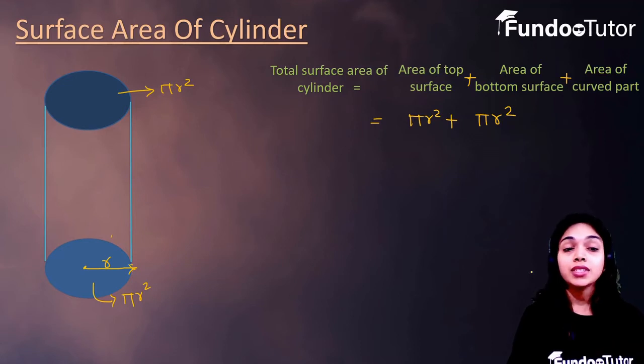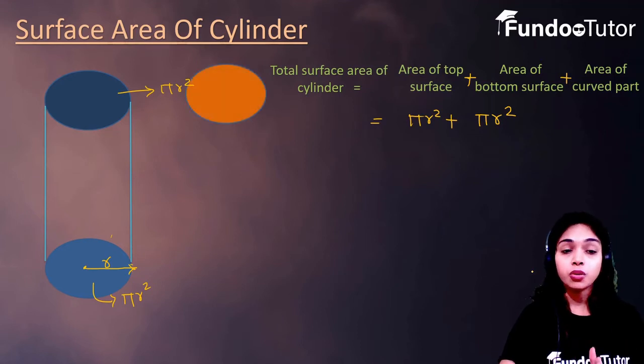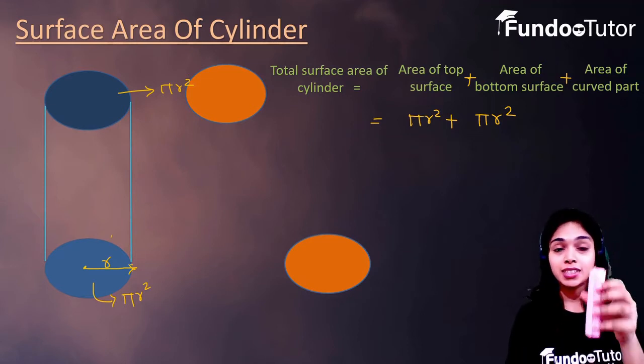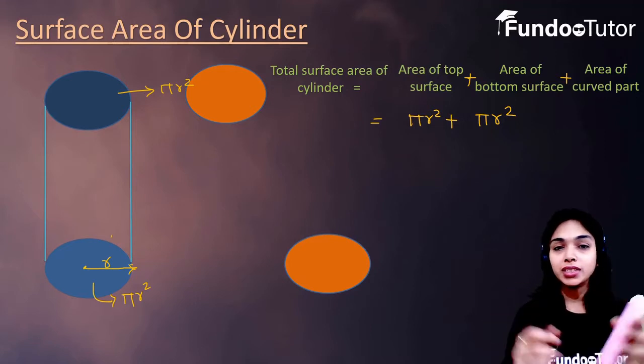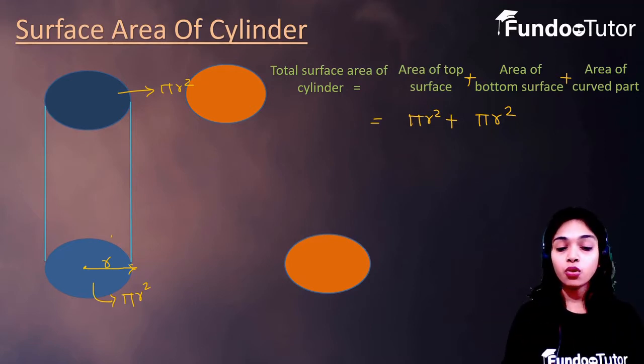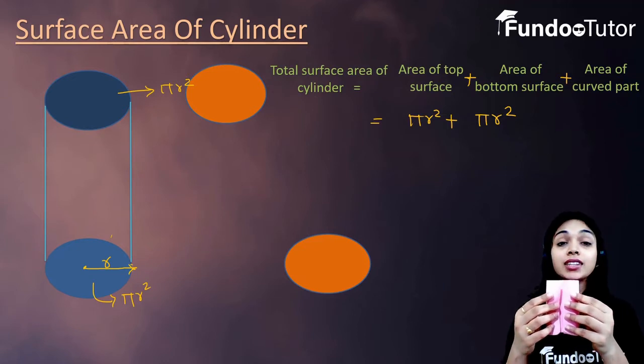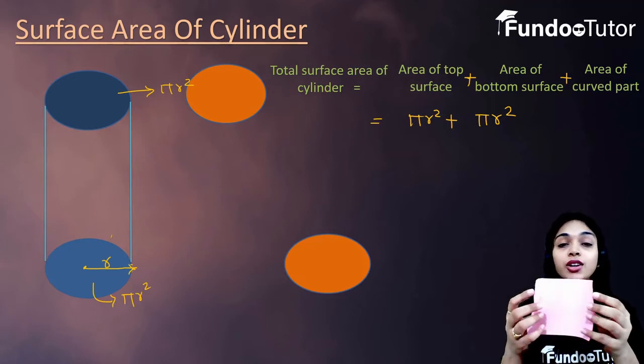To find the surface area of this curved part, first we need to separate the top surface and bottom surface. So, this is top surface and this is bottom surface. To understand the curve surface area of cylinder, first we need to cut this cylinder vertically and open it. After opening it, first it will look like this. And when it is opened up further, then it will look like this.